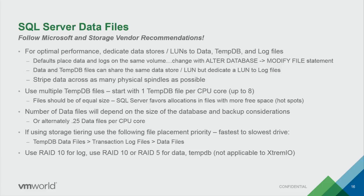The files need to be of equal size — SQL Server tends to write to files that have more free space, so if one file is larger it will get hit harder until free space equalizes across all of them. Equally sized files are very important to avoid hot spots. The number of data files depends on the database size and what kind of backups you want to do — some blogs recommend 0.25 data files per core, but typically it's driven by database size and backups. If you're using storage tiering with different speeds, TempDB files go on the fastest tier, then logs, then data files. For log data, use RAID 10; you can use either RAID 10 or RAID 5 for data and TempDB.